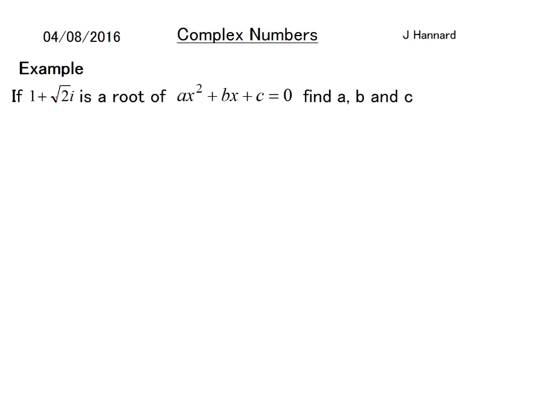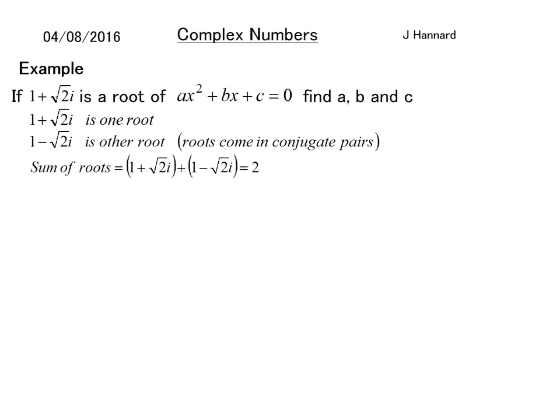Let's do another one. If 1 + √2i is a root of ax² + bx + c = 0, find a, b, and c. So 1 + √2i is one root, therefore 1 - √2i is the other root because roots come in conjugate pairs (only complex roots, by the way).